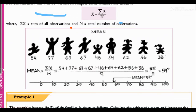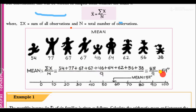Here you can see a diagram showing marks of a number of students: 50, 54, 77, 67, 67, 46, 64, 62, 56, 38. The total number of students is 9. When you calculate the sum and divide by 9, the arithmetic mean comes out to approximately 57.1 divided by 9, which gives us 59. This is how we find the mean.